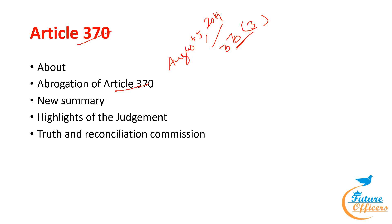Regarding the Truth and Reconciliation Commission, according to Justice Sanjay Kaur, it is advised to establish a Truth and Reconciliation Commission to investigate claims of human rights breaches in Jammu and Kashmir by state and non-state actors. The Commission serves as an official channel for disclosing government misconduct and allowing historical disputes to be discussed and resolved. That is all from Article 370.